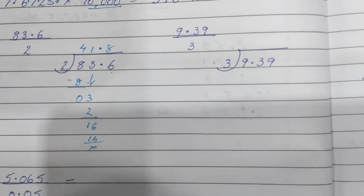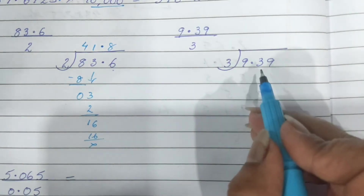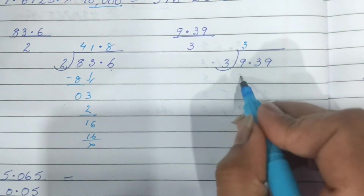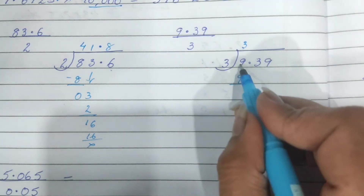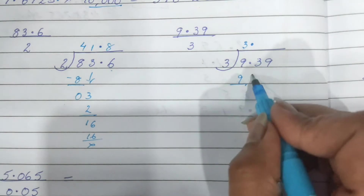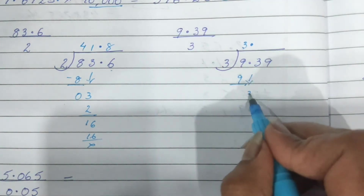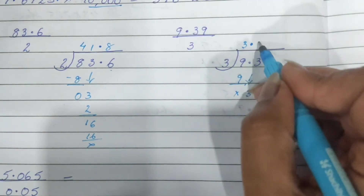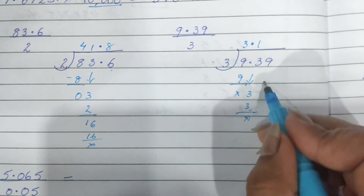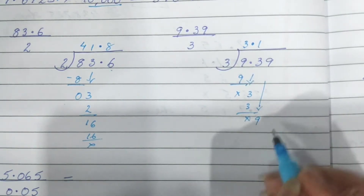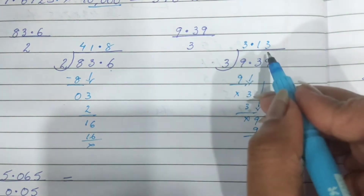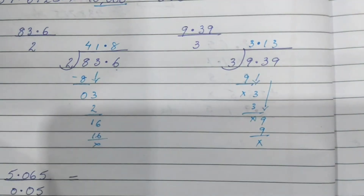Similarly I have taken one more example. Now dividing by 3: 3 threes are 9, and after 9 we have a decimal, so in the quotient you also put a decimal. Copy down the next number, that is 3 — one time. Copy down the next number, that is 9 — three times. This is how a decimal is placed in the quotient.